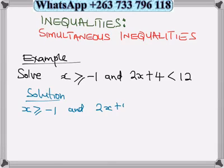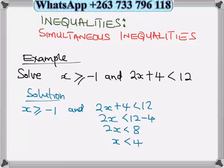x is greater than or equal to minus 1, so I want to find the condition for x here. So the solution: x is greater than or equal to minus 1 and 2x plus 4 is less than 12, so we'll deal with this side. 2x is less than 12 minus 4. You can see that 4 has moved to this side, then it becomes 8. Then we divide by 2 both sides, then x is less than 4.